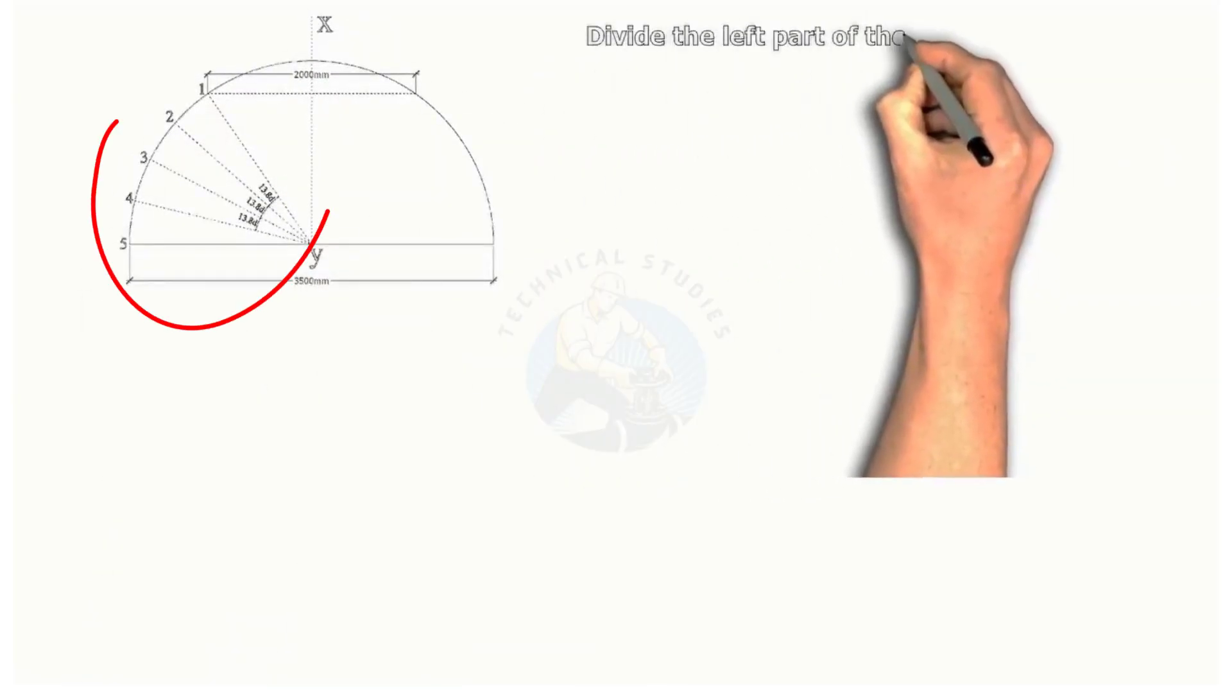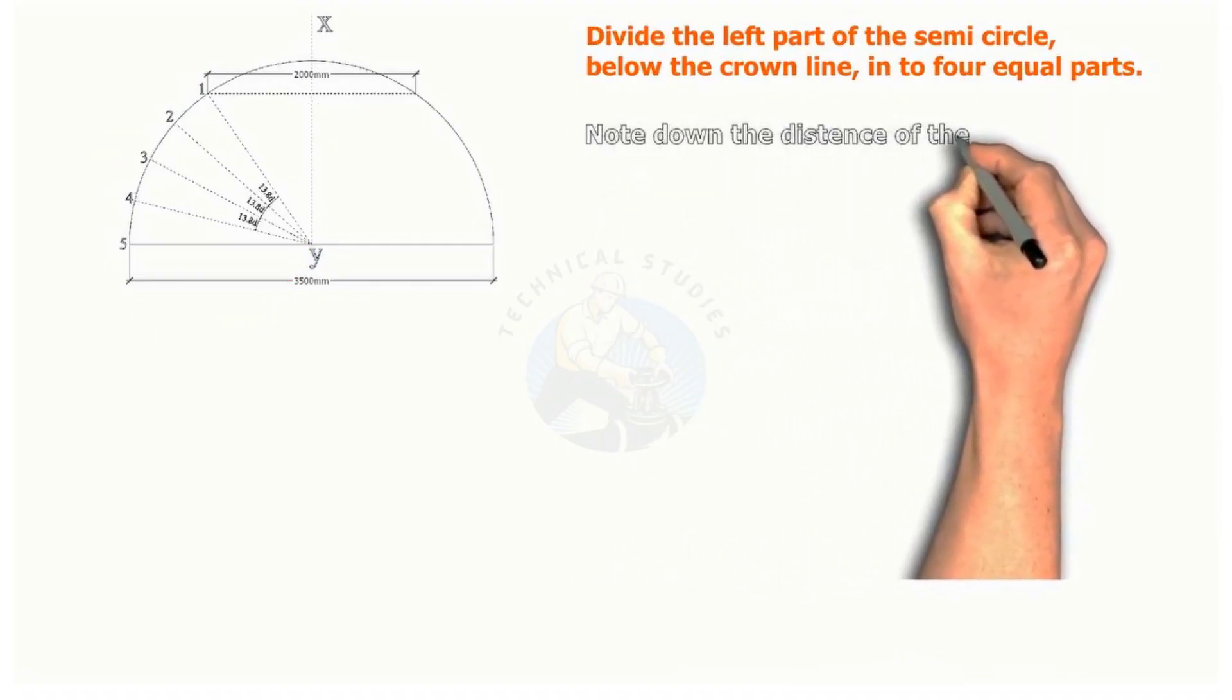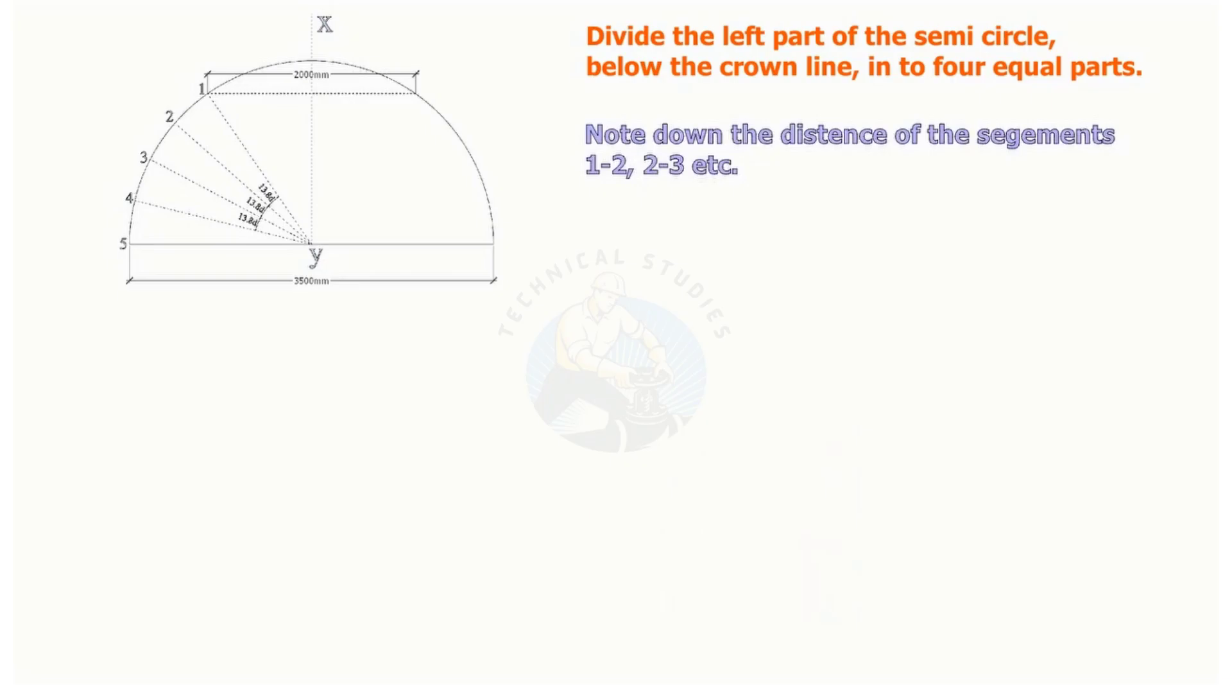Divide the petal side into four equal parts, as shown. Note down the arc lengths: 1 to 2, 2 to 3, etc.